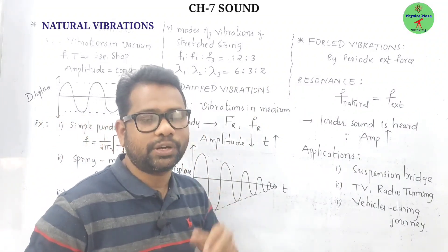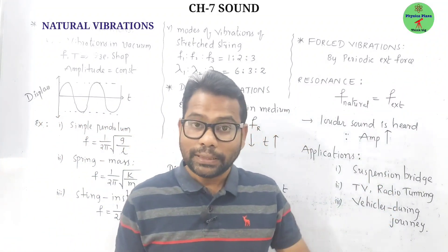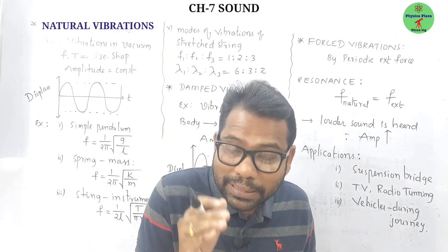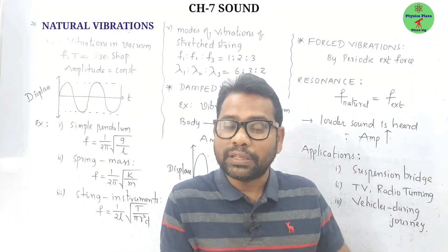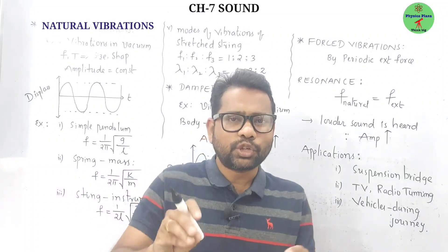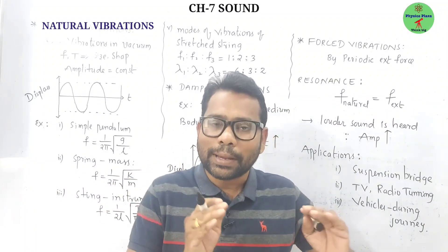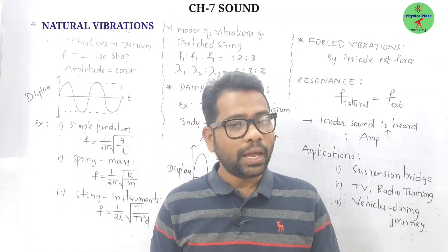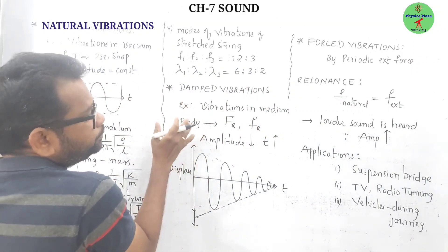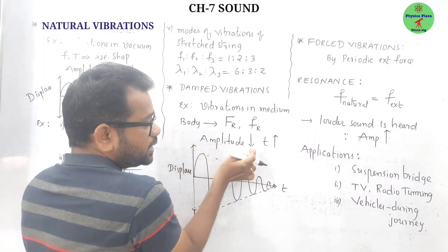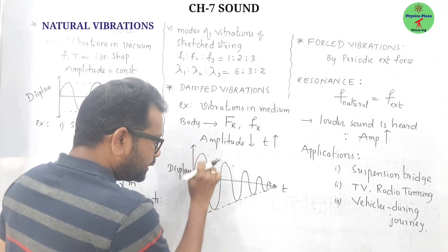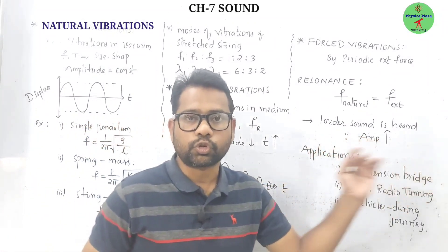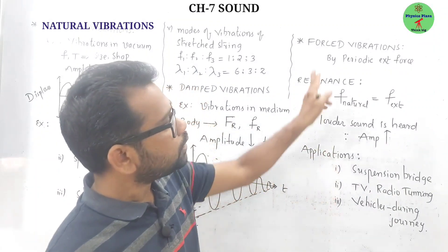Damped vibrations are periodic vibrations with decreasing amplitude in the presence of an external resistive force. Examples include oscillations of a pendulum in air and vibrations of a tuning fork in air. As time passes, amplitude decreases and the oscillations eventually cease because energy is lost against friction.